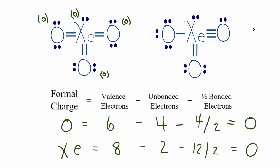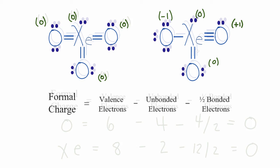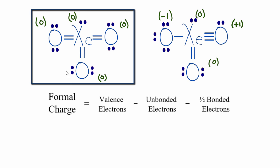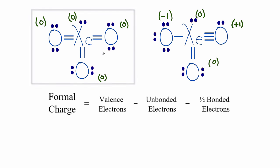If we calculate formal charges for the other Lewis structure, the formal charges are not as close to zero. We get a minus one and a plus one on an oxygen, which is unusual because oxygen is very electronegative. Therefore this second structure is less likely. The first structure — with all formal charges at zero — is the most favorable Lewis structure for XeO₃.